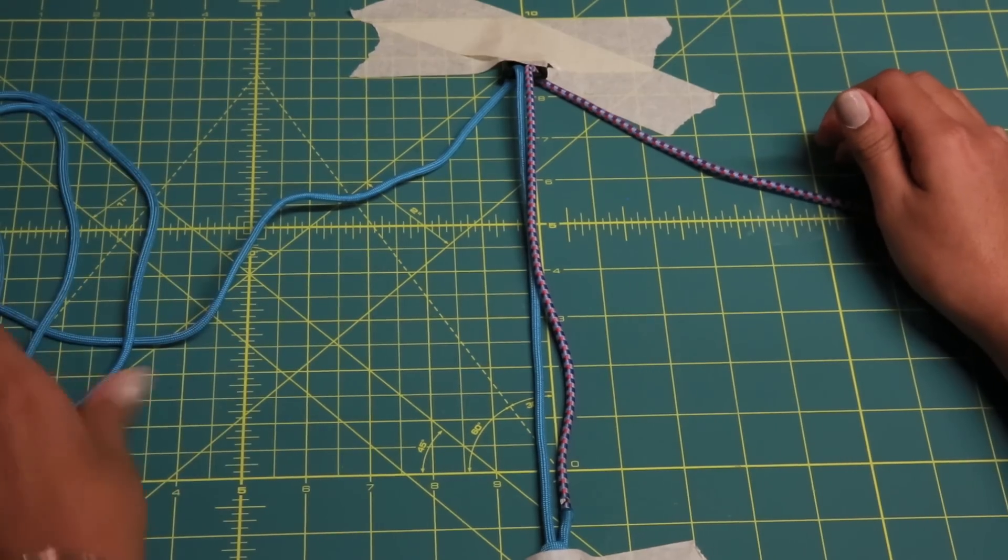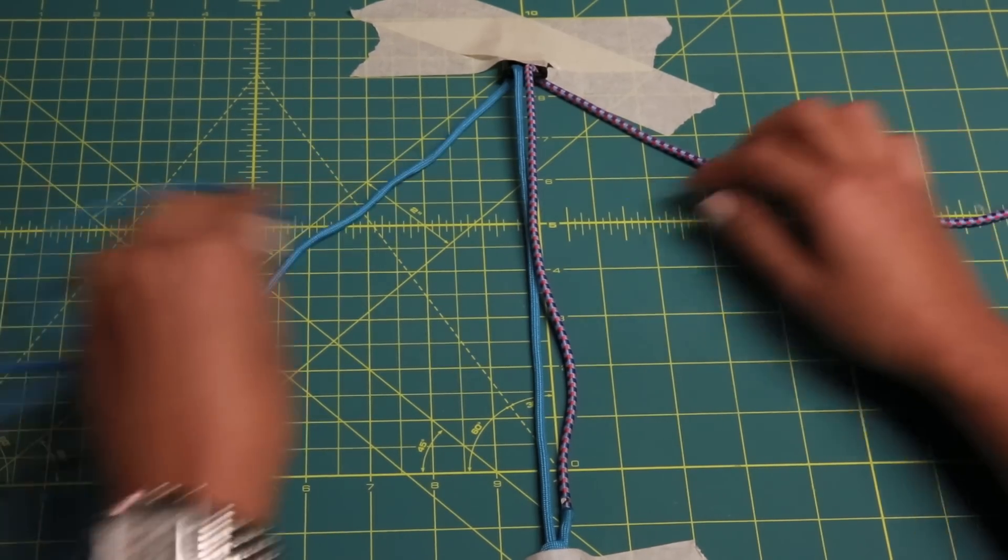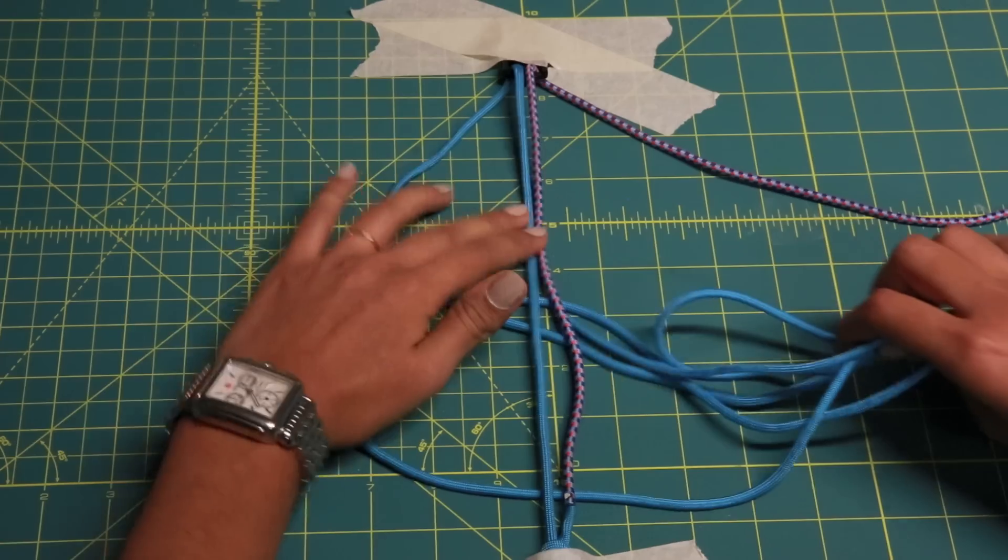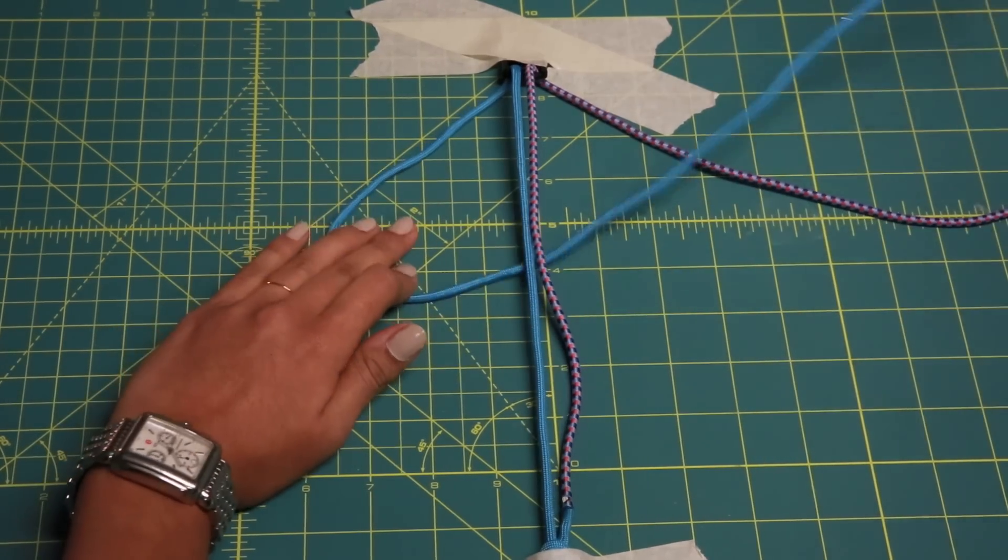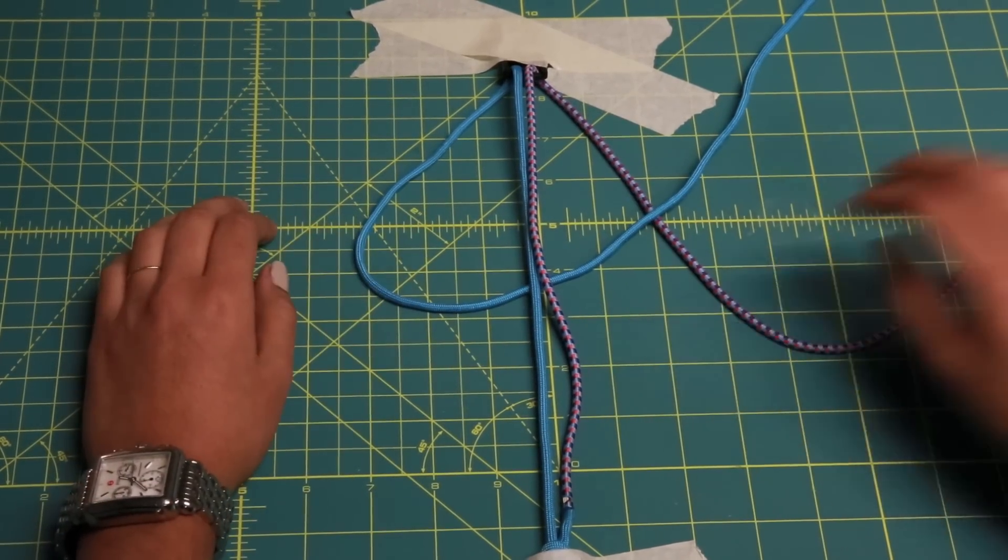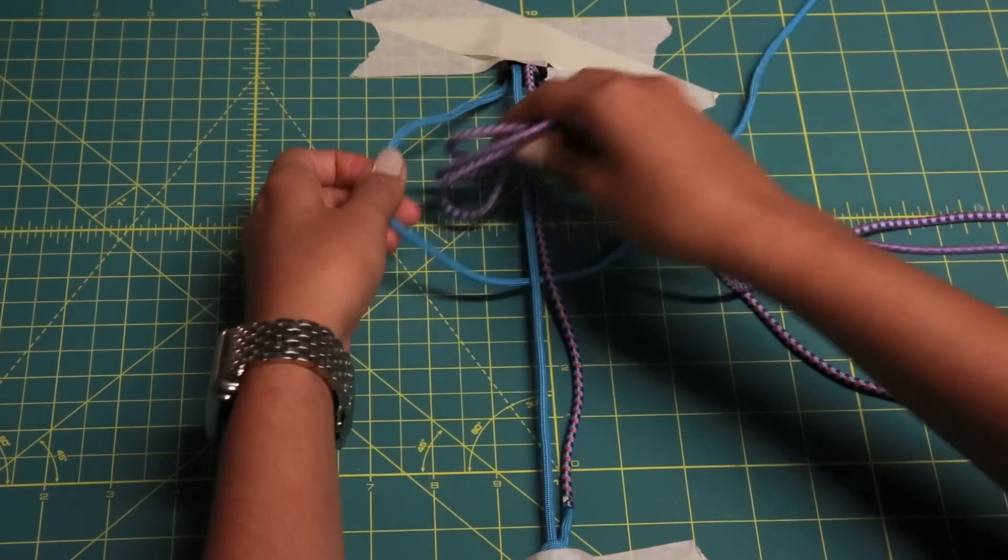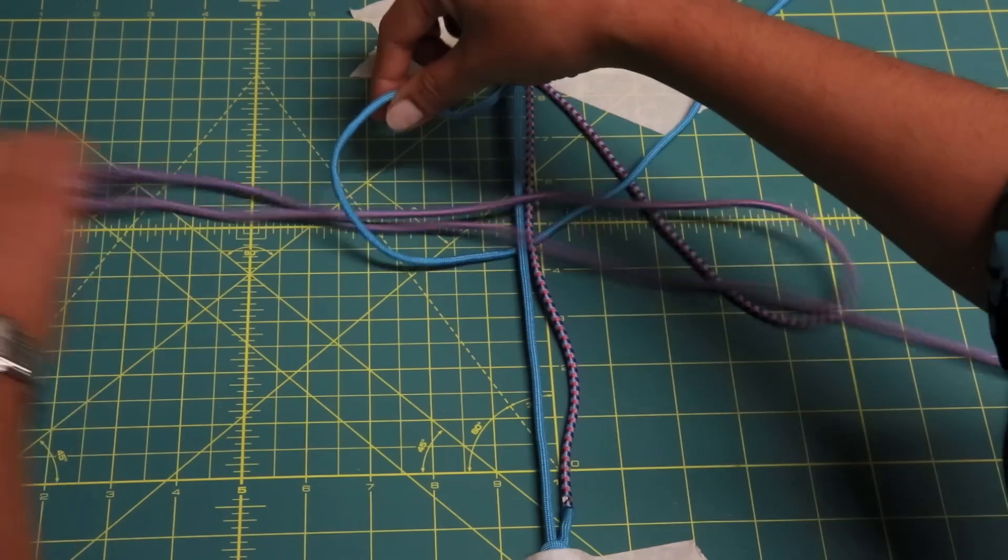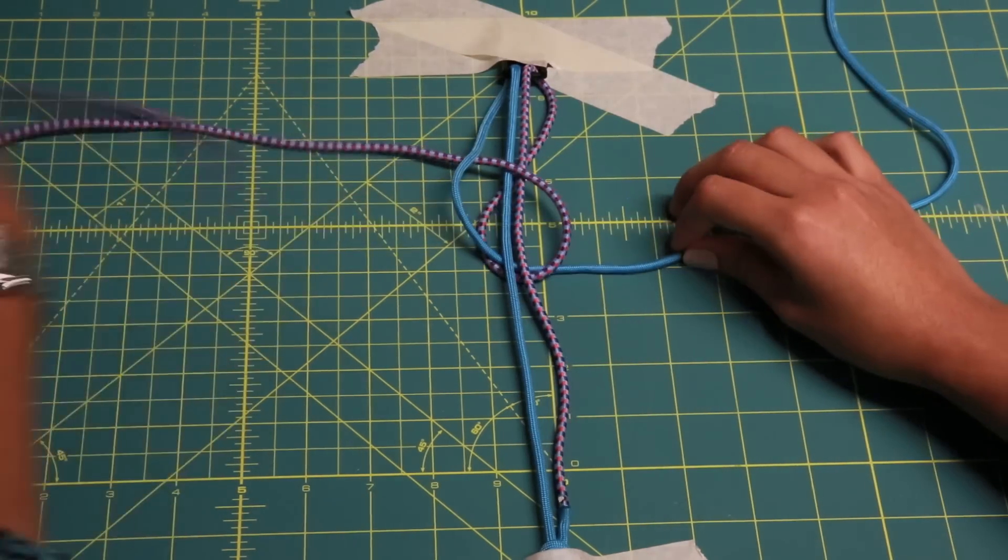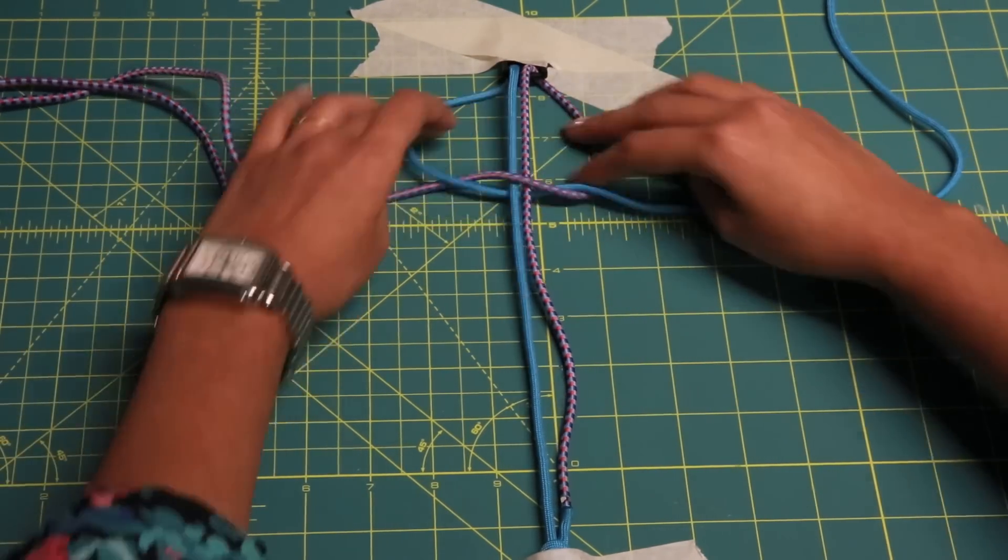So you get your left cord and you go under the two middle and over the right cord. And then you take your right cord and you go over the two middle and under your left cord. So you should have this shape.